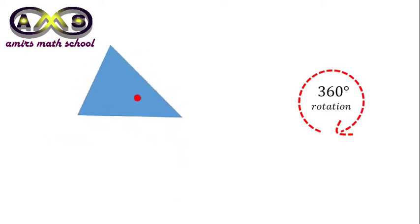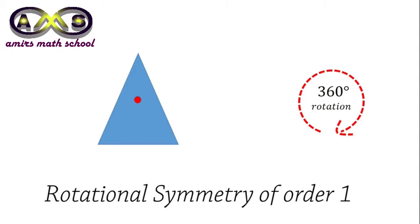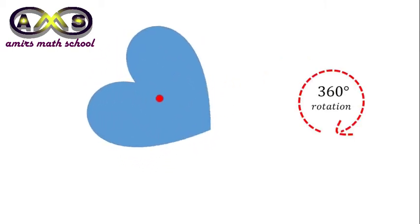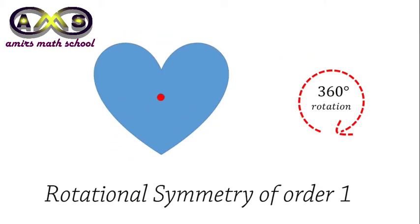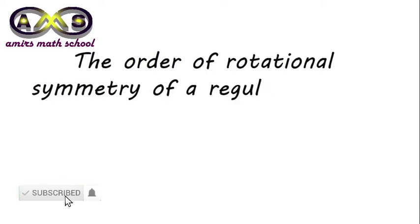For this triangle, after 360 degree rotation with respect to the red point from the initial position, it became identical with the initial one. So, it has rotational symmetry of order 1, or we can say there is no rotational symmetry for this triangle. For this heart shape, the result is the same — rotational symmetry of order 1. The order of rotational symmetry of a regular polygon is the same as the number of sides of that polygon.